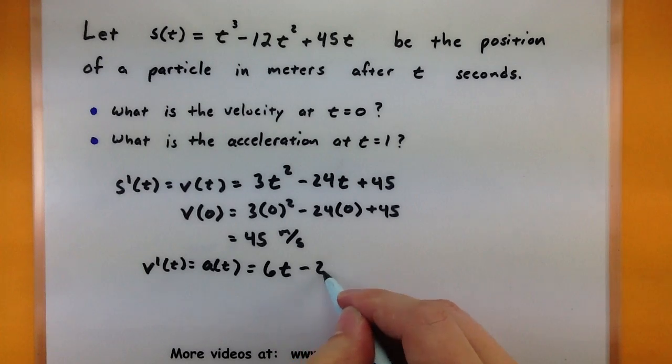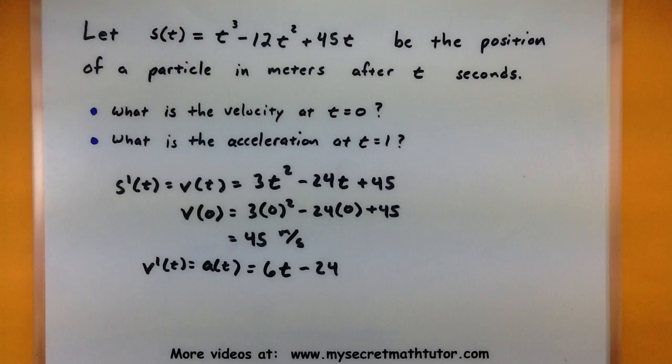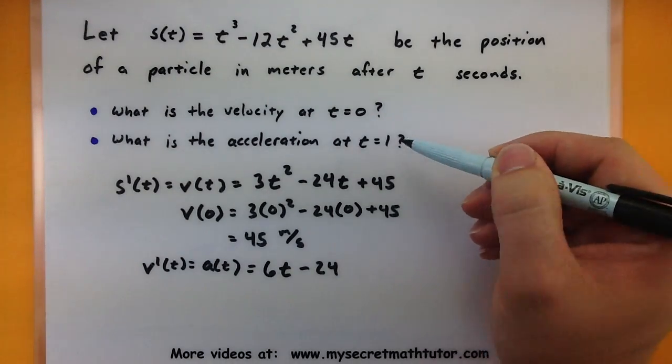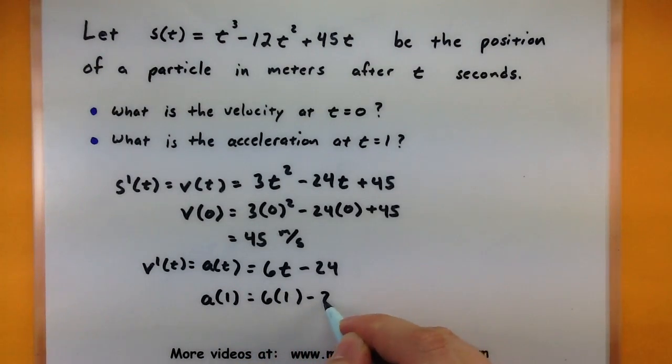Minus 24. Derivative of a constant would be zero. So now I have my acceleration. We can figure it out after one second by plugging in a one. Six times one, minus 24. Six minus 24.